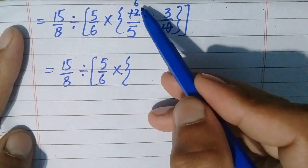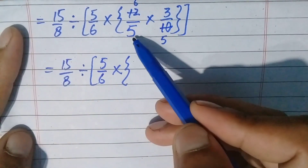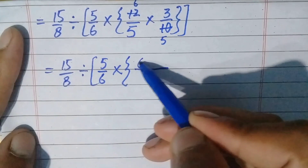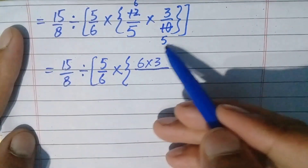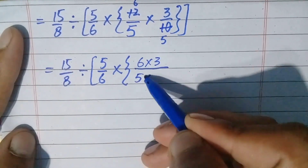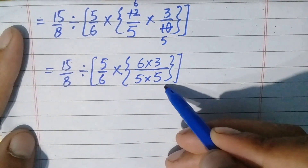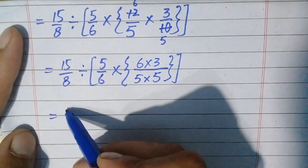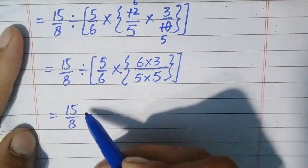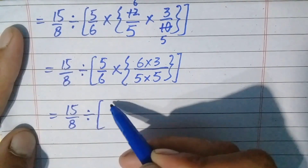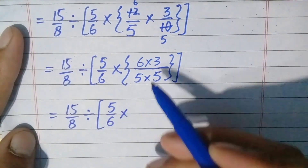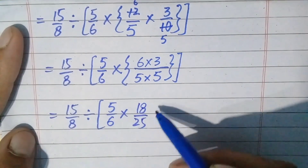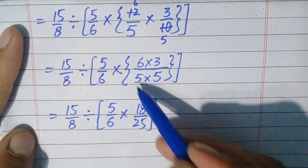When multiplying fractions, we multiply the numerators with each other and the denominators with each other. In the numerator are 6 and 3, so we multiply 6 and 3. The denominators are also multiplied: 5 times 5. Braces close, square brackets close. Writing the remaining question: 15/8 divide, square bracket open, 5/6 multiply, 6 times 3 is 18, divided by 5 times 5 is 25. Square bracket close.